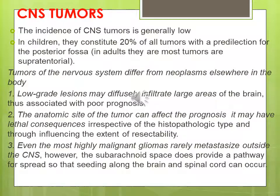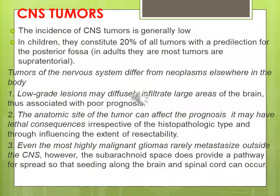The tumor of the nervous system differs from the tumor elsewhere in the body by some points. The first one is that the tumor of the CNS is a low-grade tumor — it requires a long time to be metastasized or to increase in its size, and may diffusely infiltrate into a large area in the brain with silent signs and symptoms, which is associated with a poor prognosis.